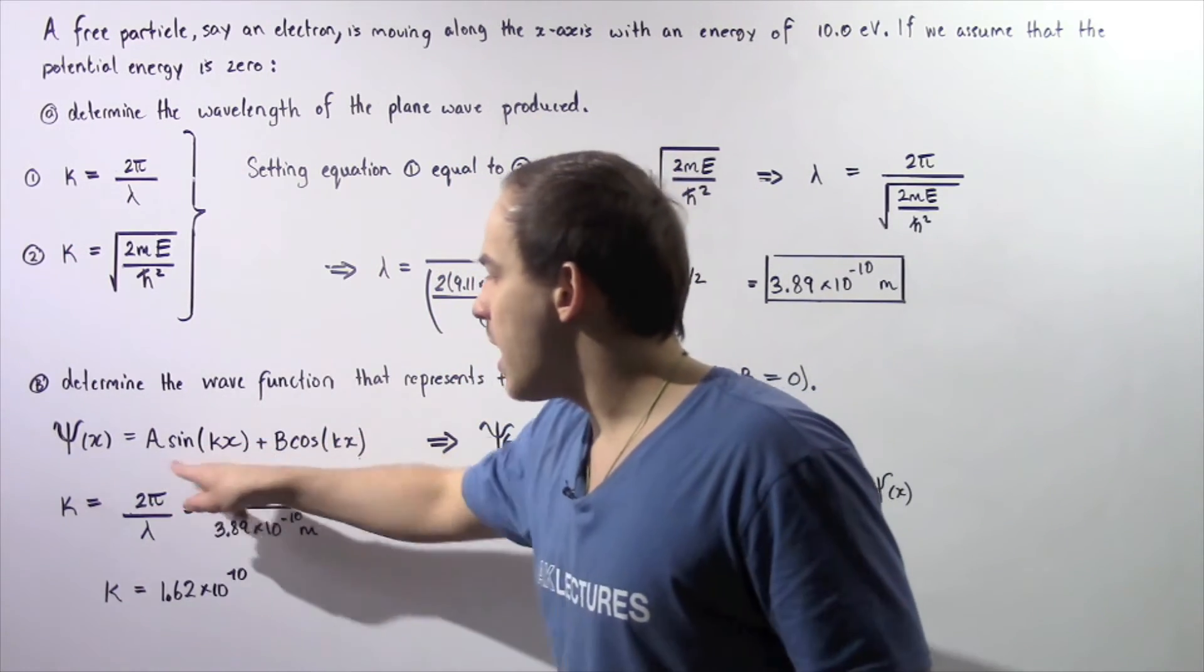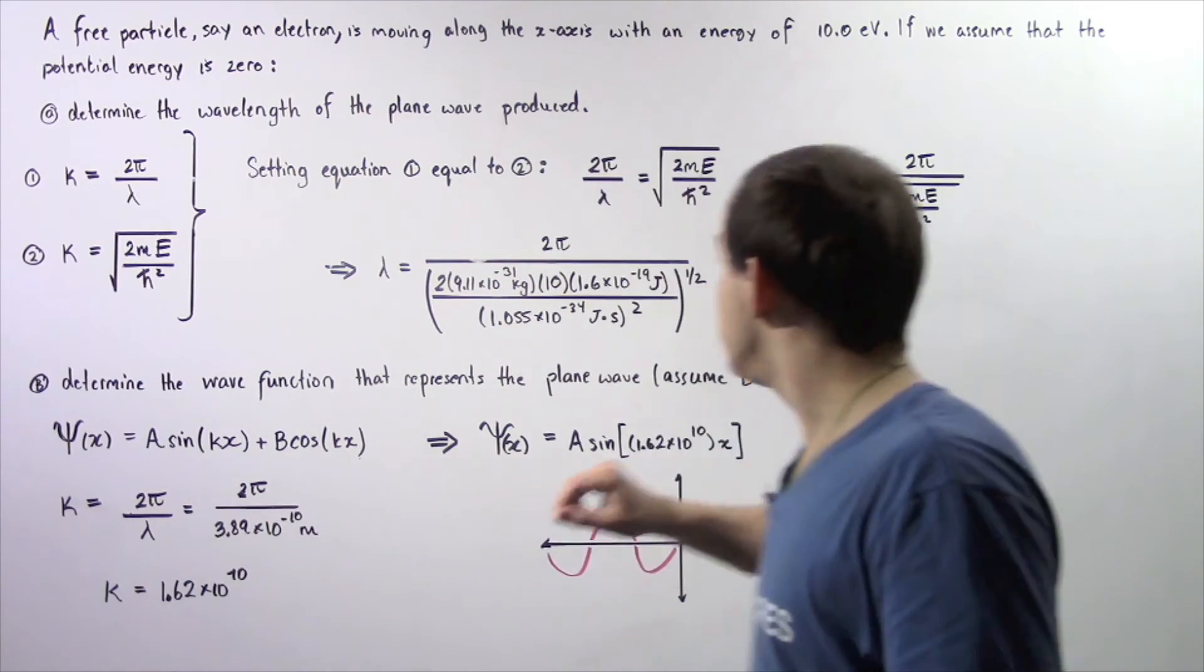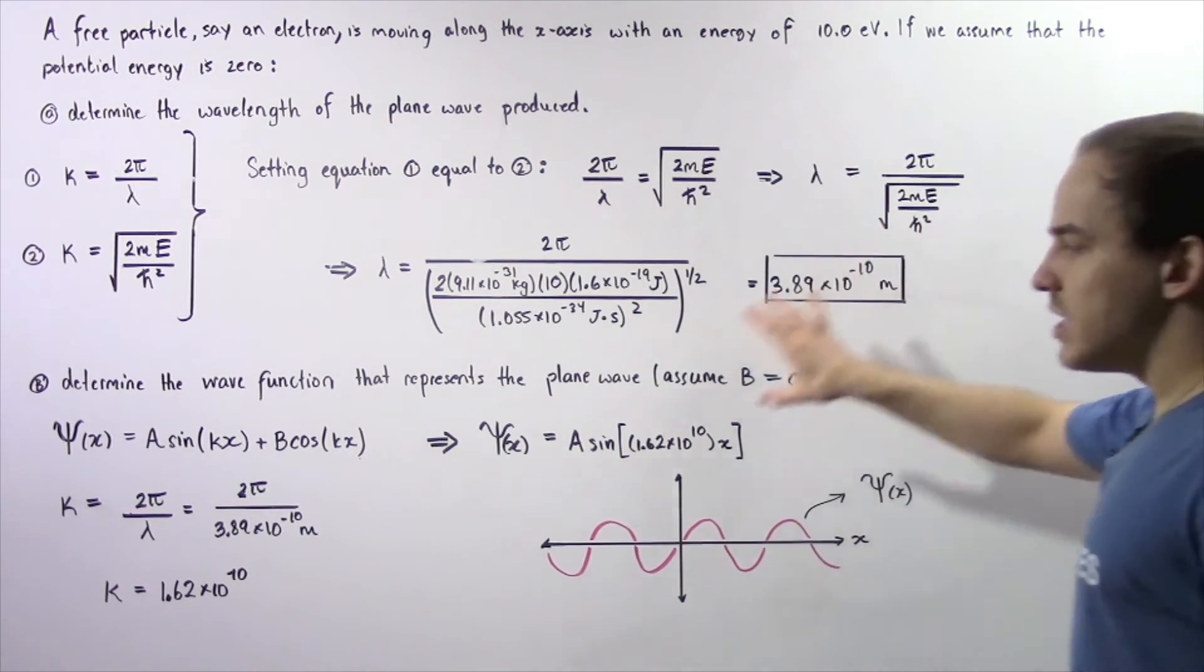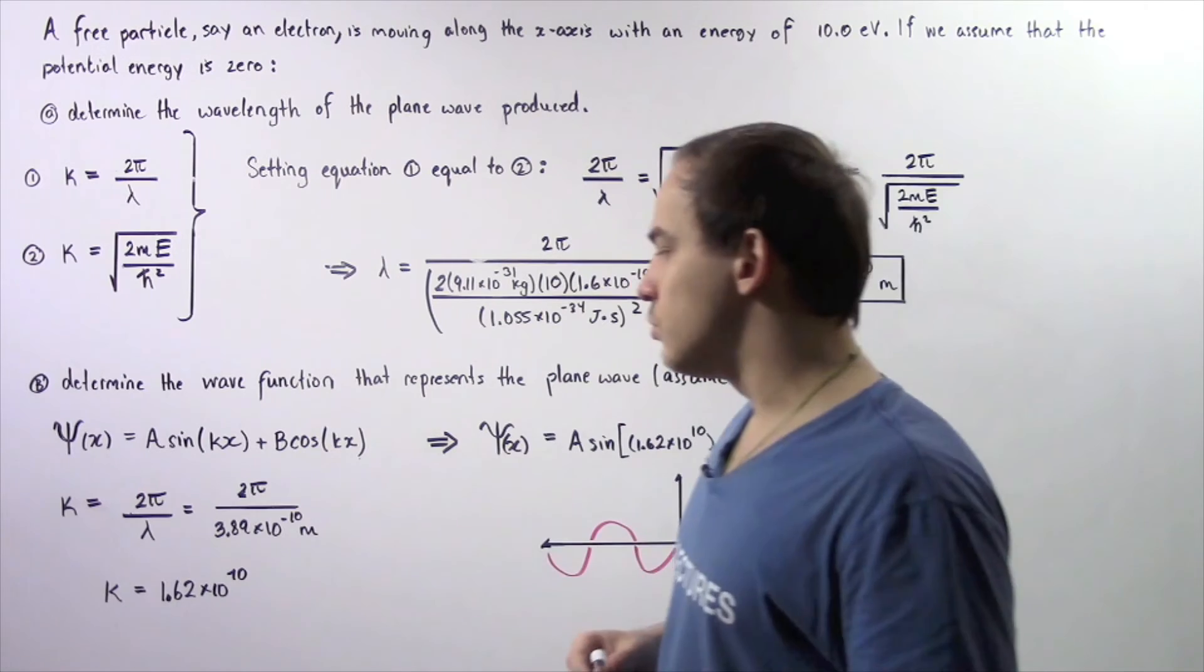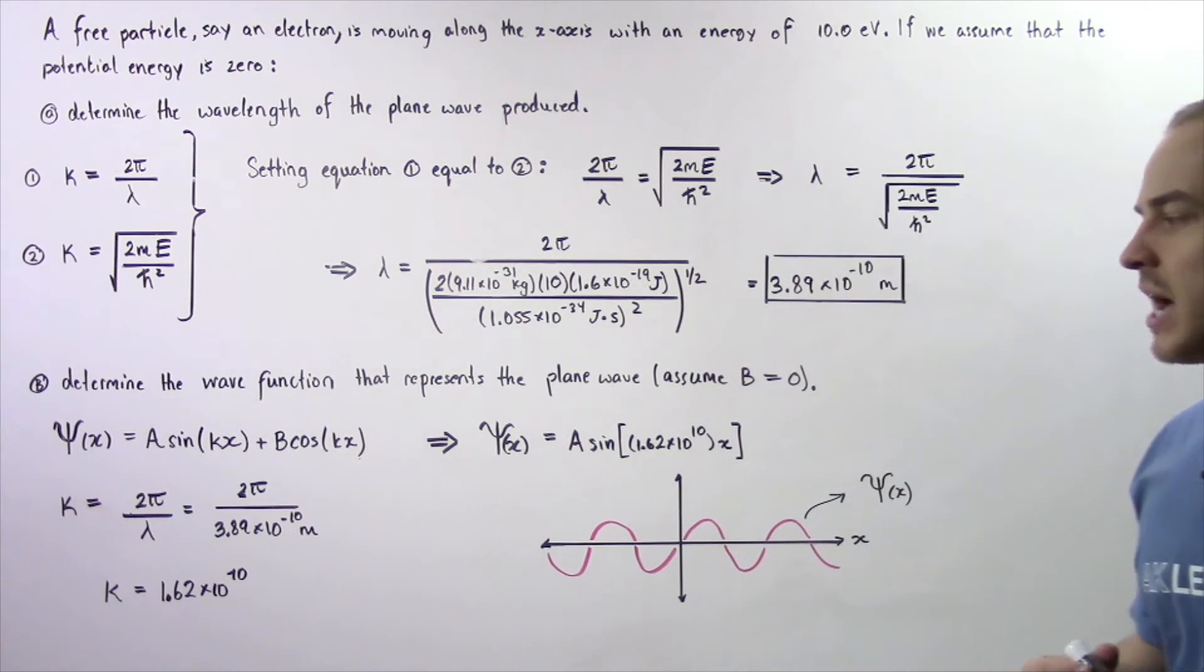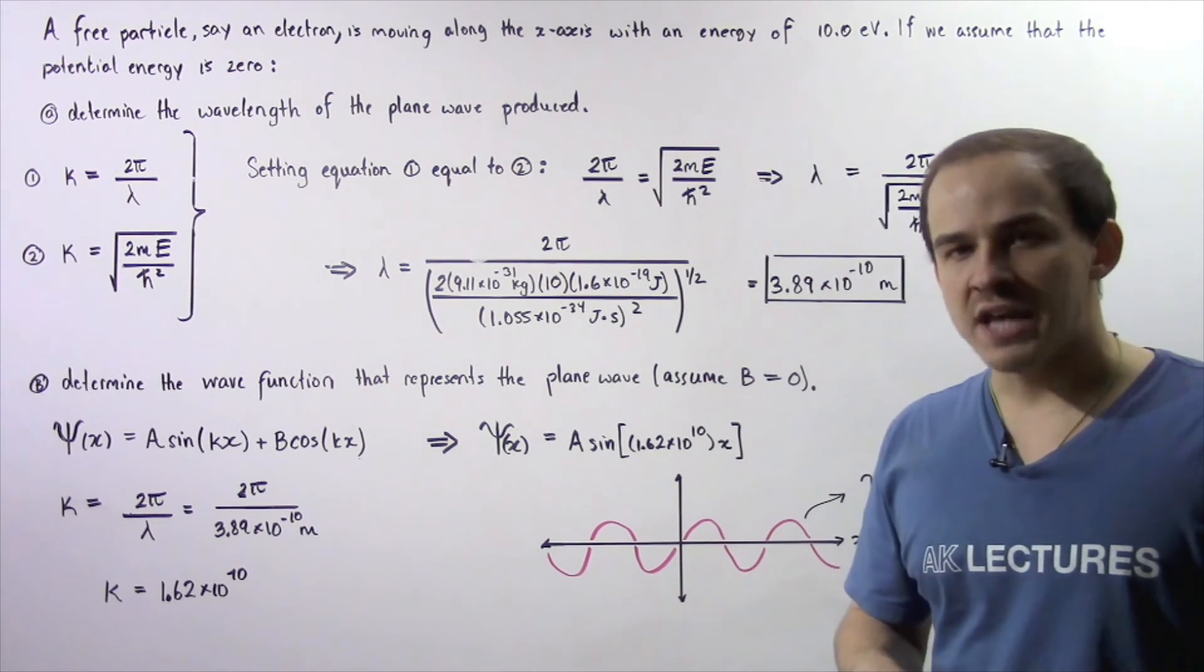k is equal to 2π divided by λ, where λ is this quantity. So we plug that in and we see that k is equal to about 1.62 times 10 to the positive 10.